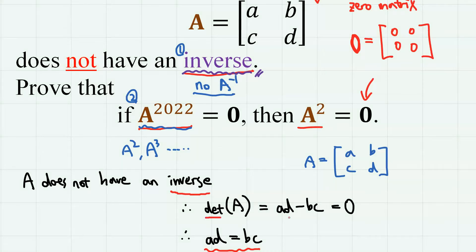Then the determinant of A, which is AD minus BC, must be equal to 0. So we have the relation AD equals BC.